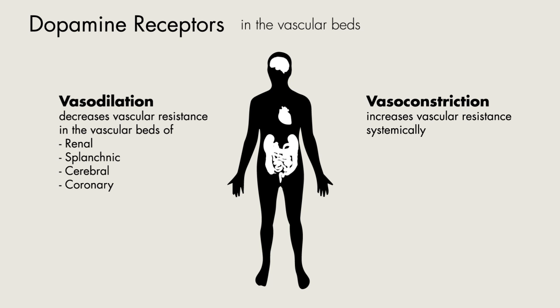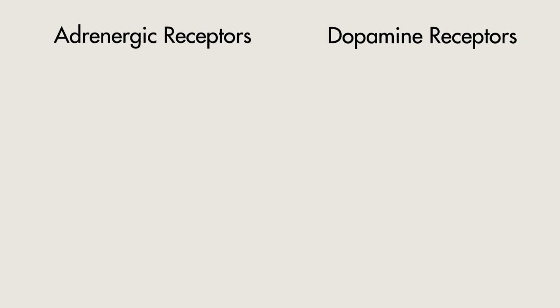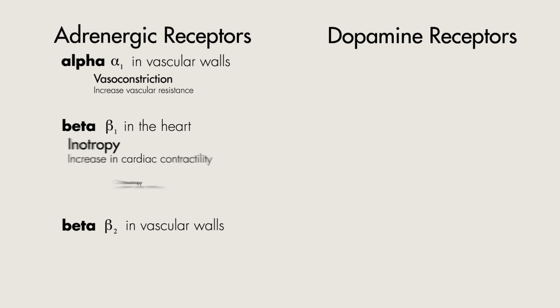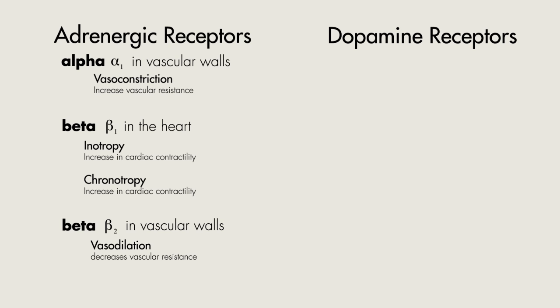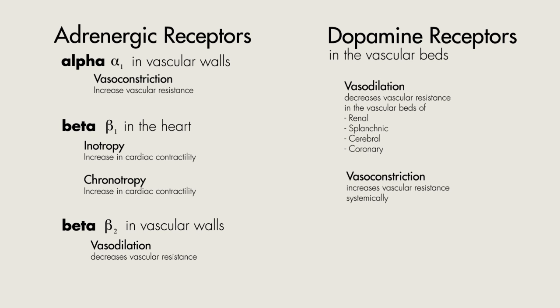So in summary, there are three main classes of vasoactive and inotropic receptors you should be familiar with: the alpha-adrenergic receptors found on vascular walls, beta-adrenergic receptors found on the heart and also on vascular walls, and the dopamine receptors, which are found on various vascular beds.